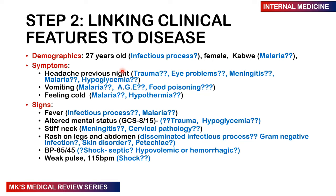Looking at the signs: fever ties in with an infectious process — malaria can cause fever. Altered mental status with a GCS of 8 suggests she's almost unconscious — could be trauma, hypoglycemia, or severe malaria. She has a stiff neck, which is not typical of malaria but is seen in meningitis or cervical pathology. She has a rash on the legs and abdomen — could this be petechiae from a disseminated gram-negative infection or a skin disorder?